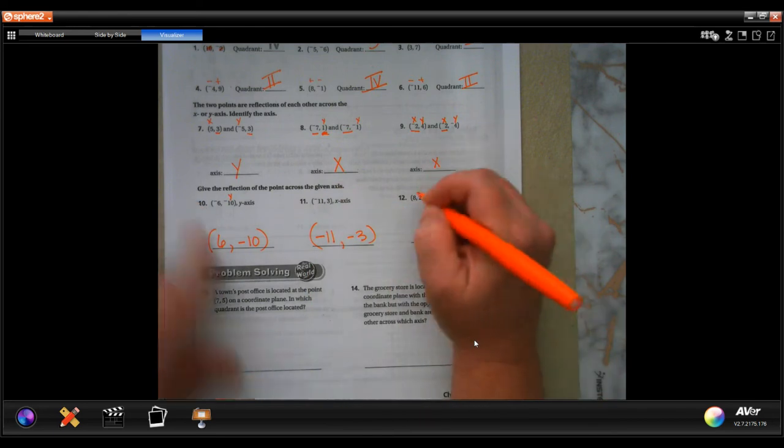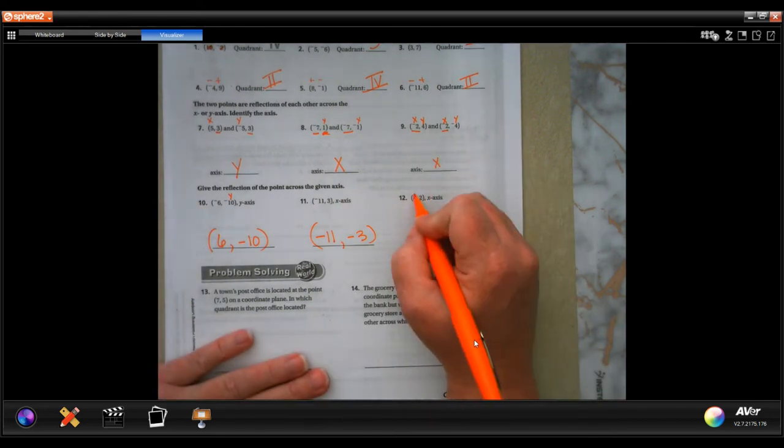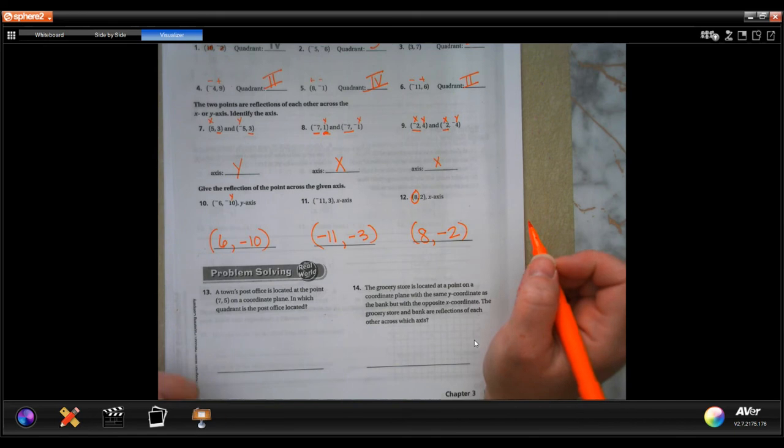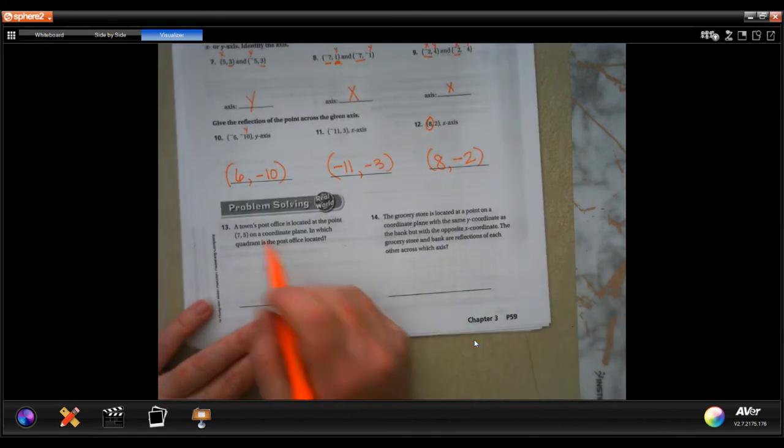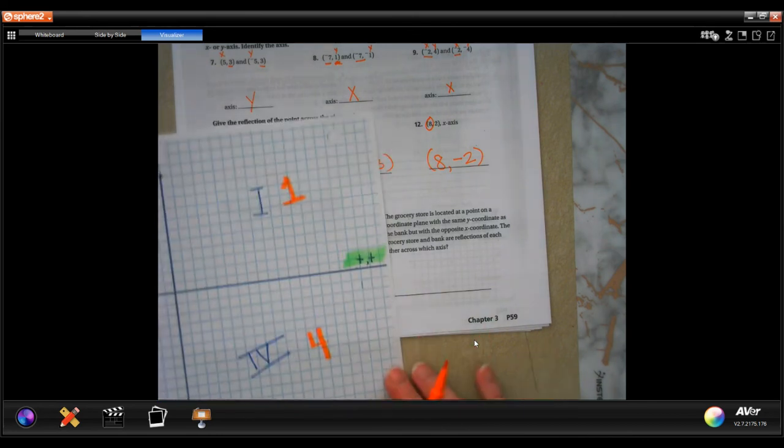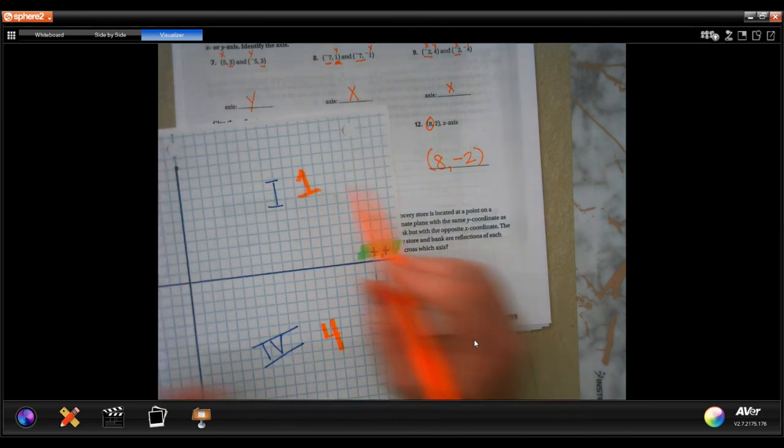The town's post office is located at the point seven comma five on a coordinate plane. In which quadrant is the post office located? Well, those are both positive numbers, going to be quadrant one. Positive positive, quadrant one.